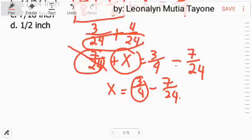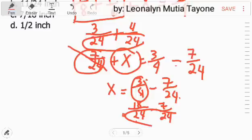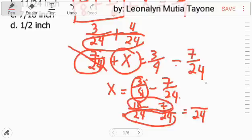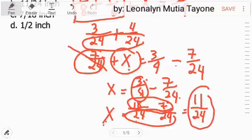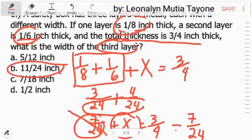This 3 fourth, to subtract it from 7 over 24, let's find the least common denominator. The least common denominator is 24. So 24 divided by 4 equals 6, 6 times 3 equals 18. So the numerator is 18. In other words, 3 fourth is equivalent to 18 over 24. Then minus 7 over 24. So we can subtract them. Copy the denominator 24, and the numerators, 18 minus 7, and that is 11. So the value of x, what we're looking for is 11 over 24, letter B.